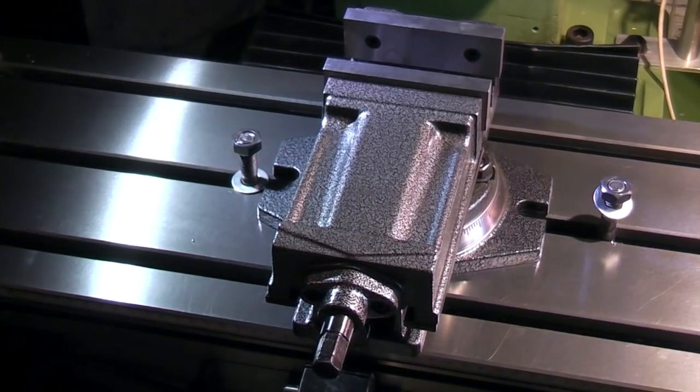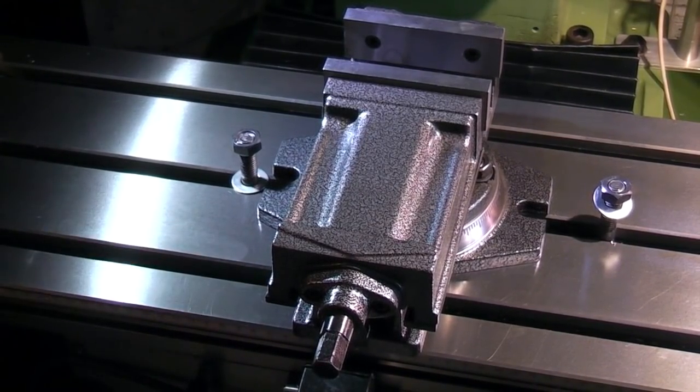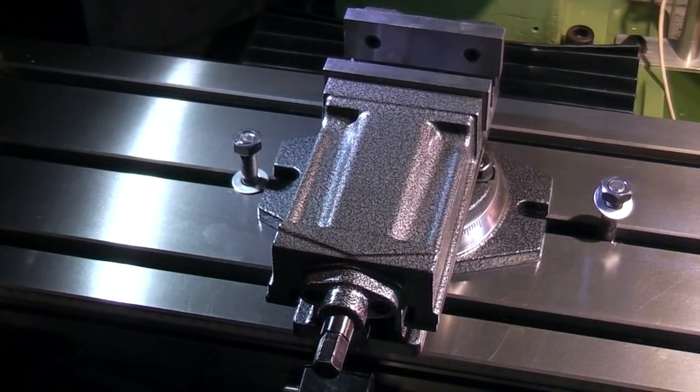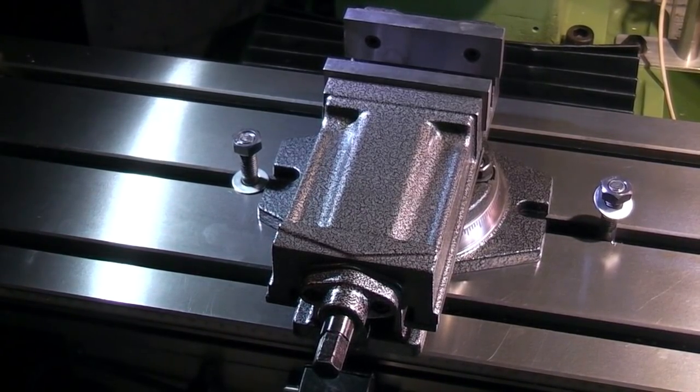The first thing I'm doing is to clean the table again, get the swarf off it. Remove the vise that I was using which was a vise for a drill press.